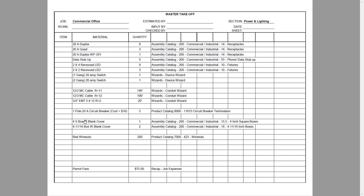Further down the takeoff form there are circuit breakers, a 4S box, 411 boxes — these are assemblies — and red wire nuts. At the bottom, there is $75 worth of permit fees, and I'll show you how to put that in. Next, I'm going to show you how to actually input these materials into Red Rhino.